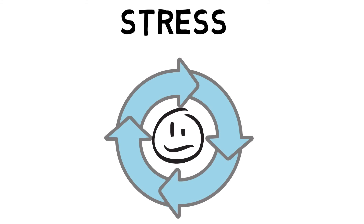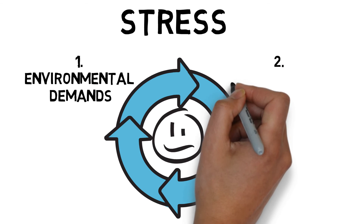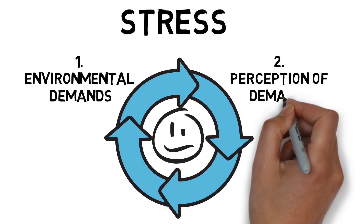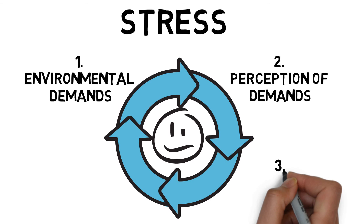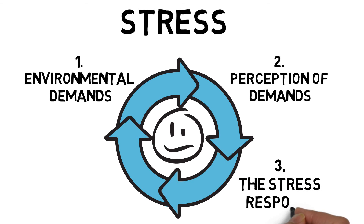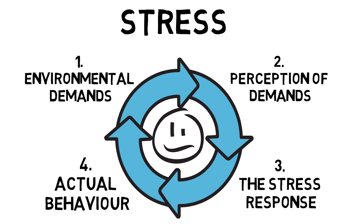The stress process involves environmental demands, which are dealing with the physical and psychological demands, such as performing a difficult skill in front of a large audience. Perception of demands involves the performer making a judgement about the specific requirements of the task and their ability to deal with them, such as feeling more anxious in a final for the first time. The stress response encompasses the somatic and cognitive reactions to the judgement the performer has made. And the actual behaviour is the performer attempting to execute the skill — their behaviour will often reflect their attitudes towards the task, such as muscle tension during an important shot.